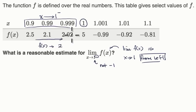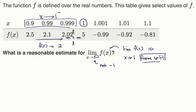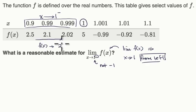We don't know for sure — that's why they're saying, what is a reasonable estimate? It might be approaching 2.01, or it might be approaching 1.999. On Khan Academy, these will often be multiple choice questions, so you have to pick the most reasonable one.